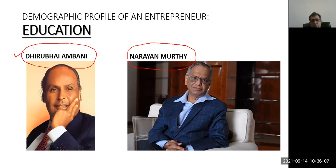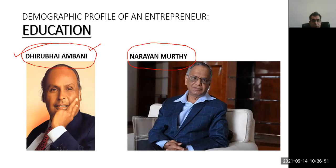Dhirubhai Ambani was just a school pass-out — he studied only up to class 10th. But he was very fond of exploring new opportunities. At a very young age, he left India and went to an African country, started working at a relative's petrol pump, and from there started getting ideas. He started a textile trading business, involved relatives and friends, and slowly started Reliance Industries, converting it into the big empire it is today. In terms of education, he had no college education, but he understood the process of doing business and that's what made him successful.